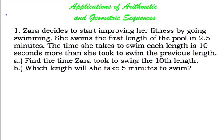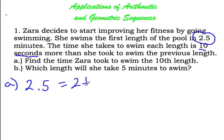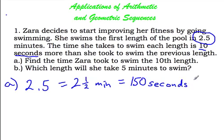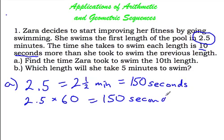What's happening here is the first length of the pool takes her 2.5 minutes. Now we're talking about increasing by 10 seconds each time, so we want to change 2.5 minutes to seconds. 2.5 minutes is 2 and a half minutes — 1 minute is 60 seconds, so that's 120 seconds plus 30 seconds, which is 150 seconds. You can just take 2.5 times 60 on your calculator and you'll get 150 seconds.